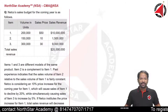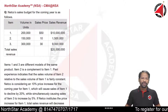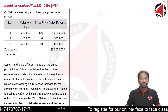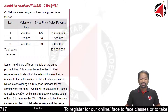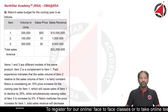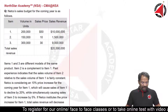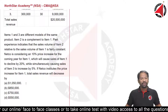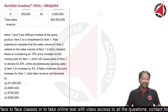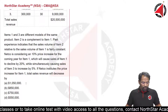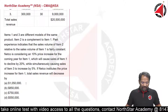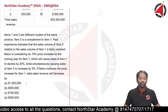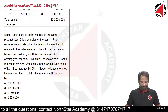Welcome to NorthStar. Netco's sales budget for the coming year has Item 1, Item 2, and Item 3. The sales unit volume, sales price, and total sales revenue are given. Item 1 and Item 3 are different models of the same product. Item 2 is a complement of Item 1, and past experience indicates that the sales volume of Item 2 relative to Item 1 is fairly constant — if Item 1 sales increase, Item 2 will also increase in the same proportion.